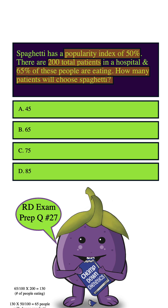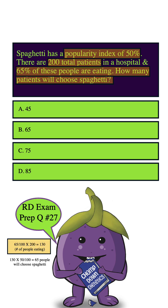So first, we've got to take 65, which is the percent of people eating, and divide it by 100, and then we multiply that by 200, which is the total amount of patients. With doing that, we get 130, which is the number of people eating.